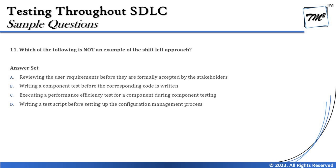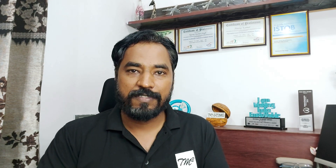Option B says: writing a component test before the corresponding code is written — that is also shift left. This refers to TDD, where testing as a driver prepones testing activities ahead of coding, which is a classic shift-left approach. Option C says: executing a performance efficiency test for a component during component testing.